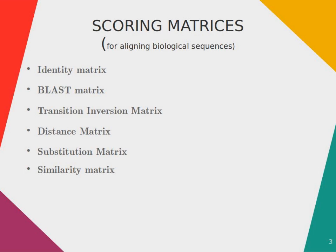There are several types of scoring matrices: identity matrix, BLAST matrix, transition-inversion matrix, distance matrix, substitution matrix, similarity matrix, etc. Let us understand about these matrices.